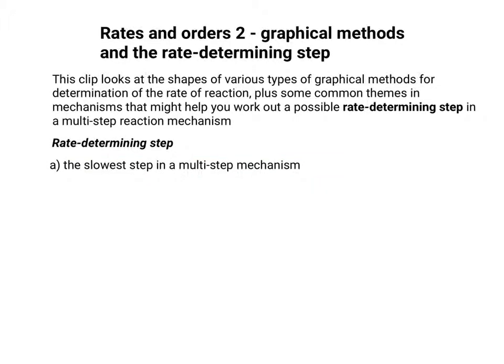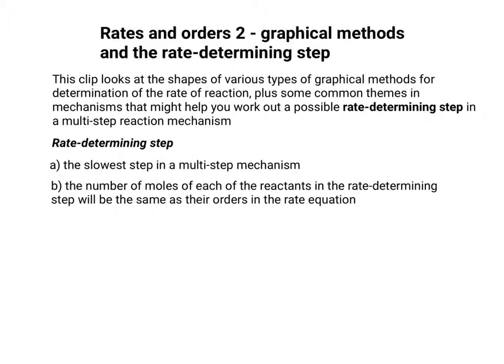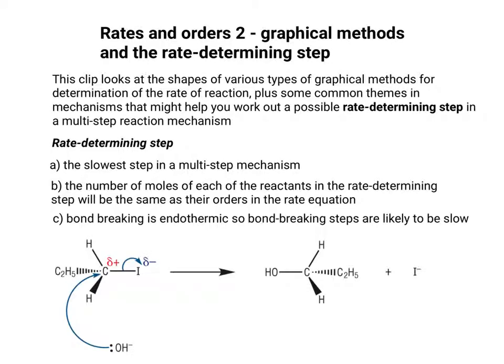Let's now look at the rate-determining step. If we consider a multi-step mechanism of any kind — whether it's one you've studied or a new one — the rate-determining step is the slowest step in that multi-step mechanism. The slowest step determines how quickly the whole reaction happens, a bit like a slow car in front of a fast one on a one-way street. The number of moles or molecules of each reactant in the rate-determining step will be the same as their orders in the rate equation.